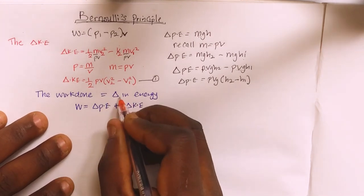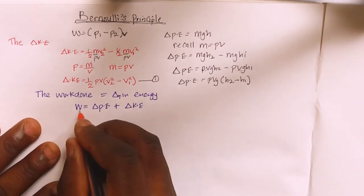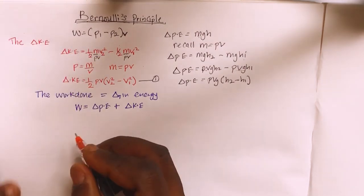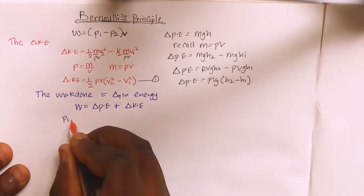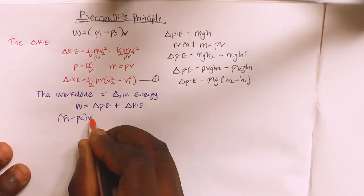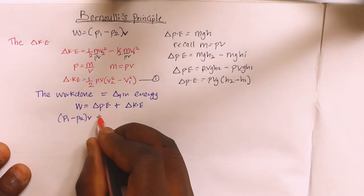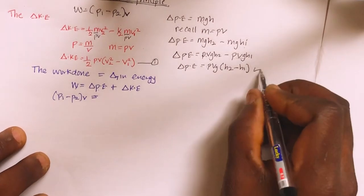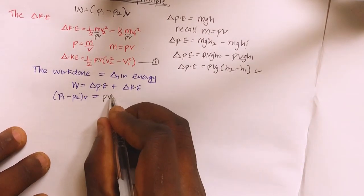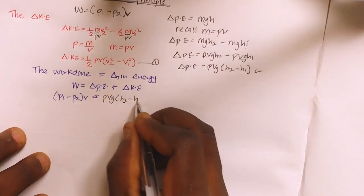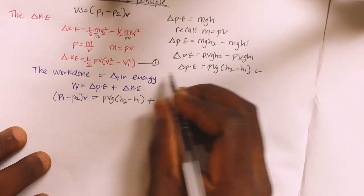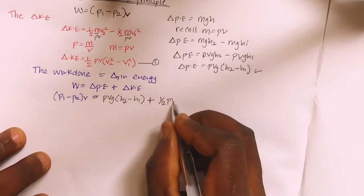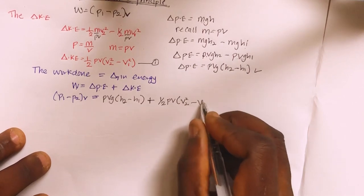So we have W equals change in PE plus change in KE. Recalling that work done is (p1 minus p2) times V, we substitute: (p1 minus p2)V equals ρVg(h2 minus h1) plus one-half ρV times (v2 squared minus v1 squared), which is equation one.